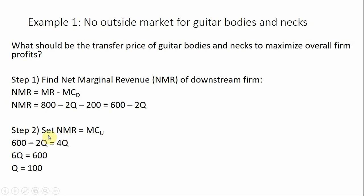The next step is setting net marginal revenue, 600 minus 2Q, equal to the marginal cost of the upstream division. The marginal cost of the upstream division is 4Q, so setting those equations equal and solving for Q gives us Q equals 100.